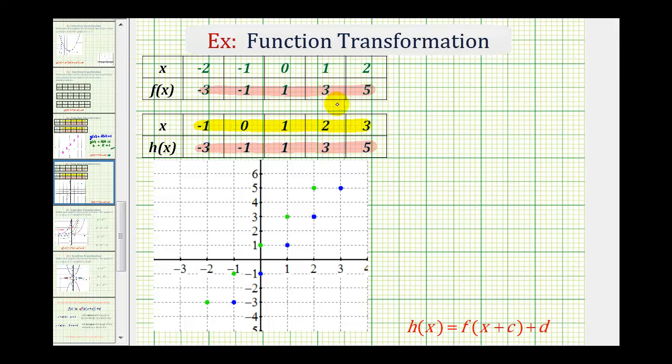now the inputs or x values are different. Notice how for the same outputs, the x values for h are one larger than the inputs for f for the same output. For example, when the output is five, the input for h is three, and the input for f is two.